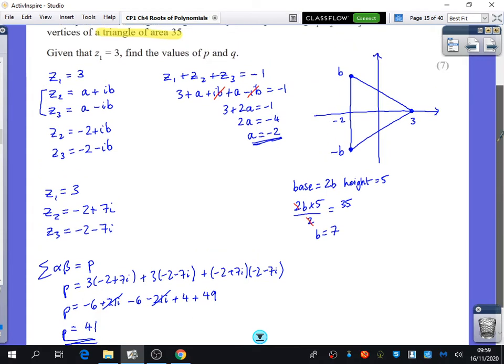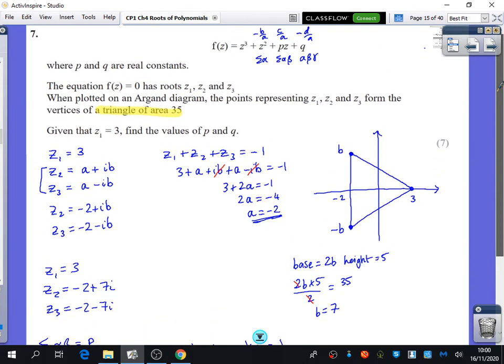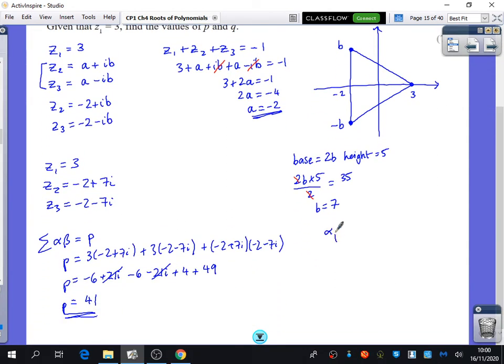And then we also knew that the product of the three roots was going to be minus d over a. So I can now say that alpha, beta, gamma is minus d over a. In other words, 3 multiplied by minus 2 plus 7i multiplied by minus 2 minus 7i is equal to minus q.